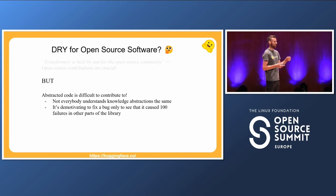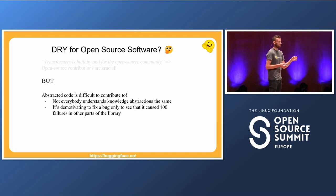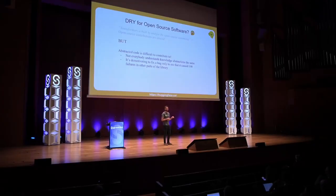If you want to contribute to a library as a first-time contributor — and we see a lot of new people coming to the field of machine learning — it's extremely demotivating if you add one model and see a hundred or a thousand tests fail in your PR. What we want is very few dependencies between components — we want to make it very easy for people to enter the field and make their first contribution to our library.